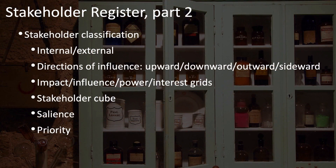The stakeholder register should also include some classifications of the stakeholders. Stakeholders can be classified as either internal or external to the organization. They can also be categorized based on their directions of influence: upward, downward, outward, or sideward. Stakeholder analysis can look at the impact, influence, power, and interest of different stakeholders and map these out on grids, in stakeholder cubes, or in salience models, and then prioritize these stakeholders based on those that need the most attention from you as a project manager.